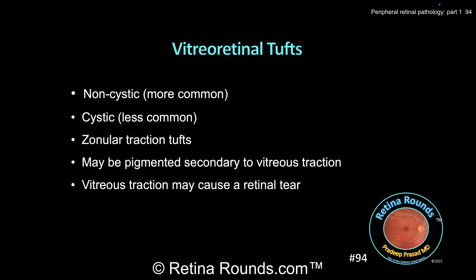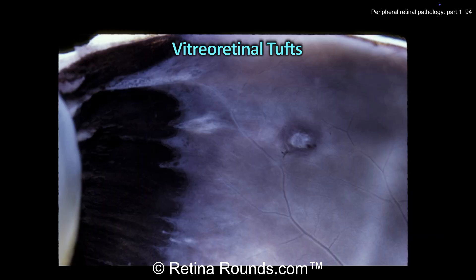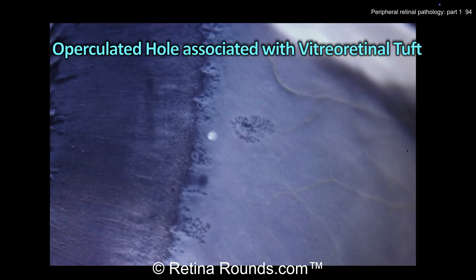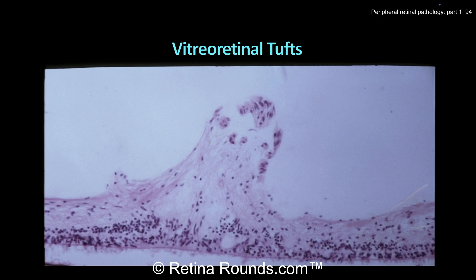Vitreous traction on these lesions can also result in retinal tears. Here's another vitreo-retinal tuft, which appears posterior to the vitreous base and has variable degrees of hyperpigmentation. Excessive vitreo-retinal traction on these lesions may result in an operculated retinal hole, as shown here. While retinal detachments may occur, these are lower-risk lesions than flap tears, since the vitreo-retinal traction has been relieved. Here's another photo of a small operculated hole associated with a vitreo-retinal tuft. This histopathology slide demonstrates the gliotic excrescence emanating from the retina, and you can faintly see hyaloid remnants still attached at the apex of the tuft.